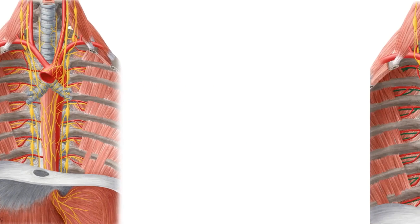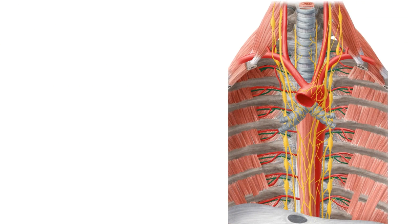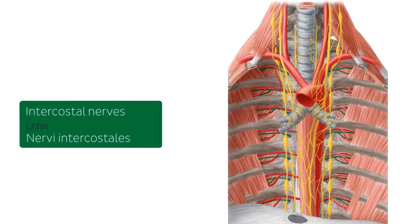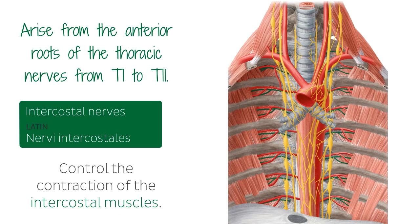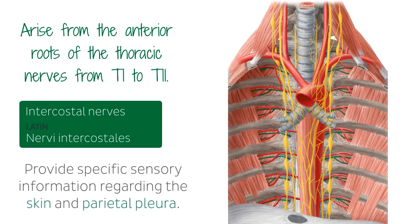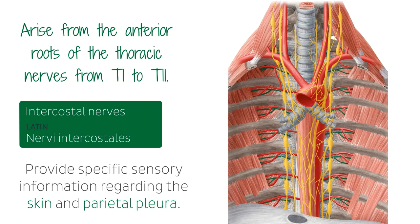We're going to start with the first ones on the list, highlighted in green. Looking at the anterior view of the thorax, we can see the intercostal nerves. These are part of the somatic nervous system and arise from the anterior roots of the thoracic spinal nerves T1 to T11. Eleven of them are located between the ribs and are therefore termed intercostal, while the 12th lies below the last rib and is called the subcostal nerve. These nerves control contraction of the intercostal muscles and provide sensory information for the skin and parietal pleura.